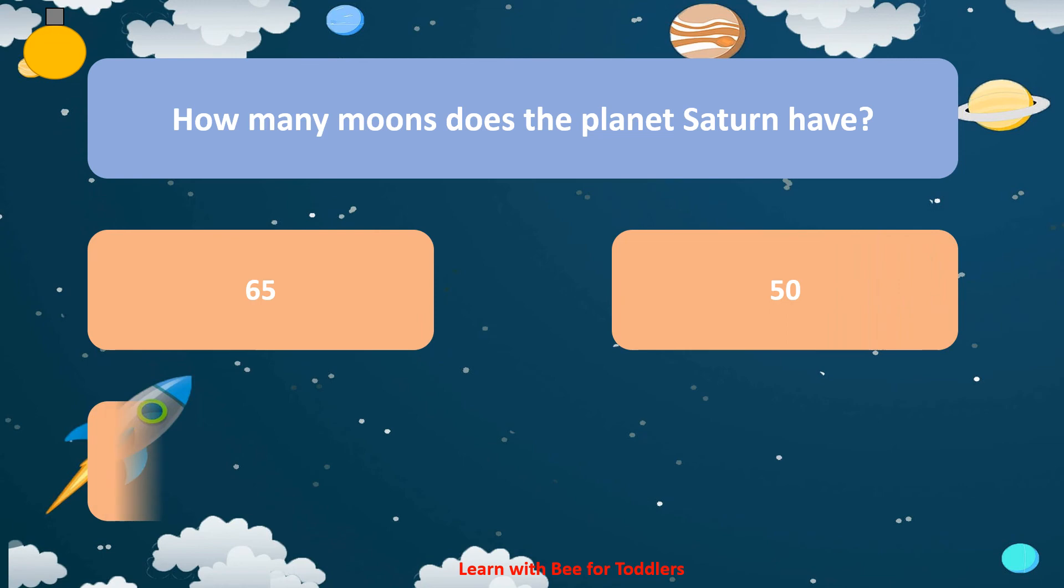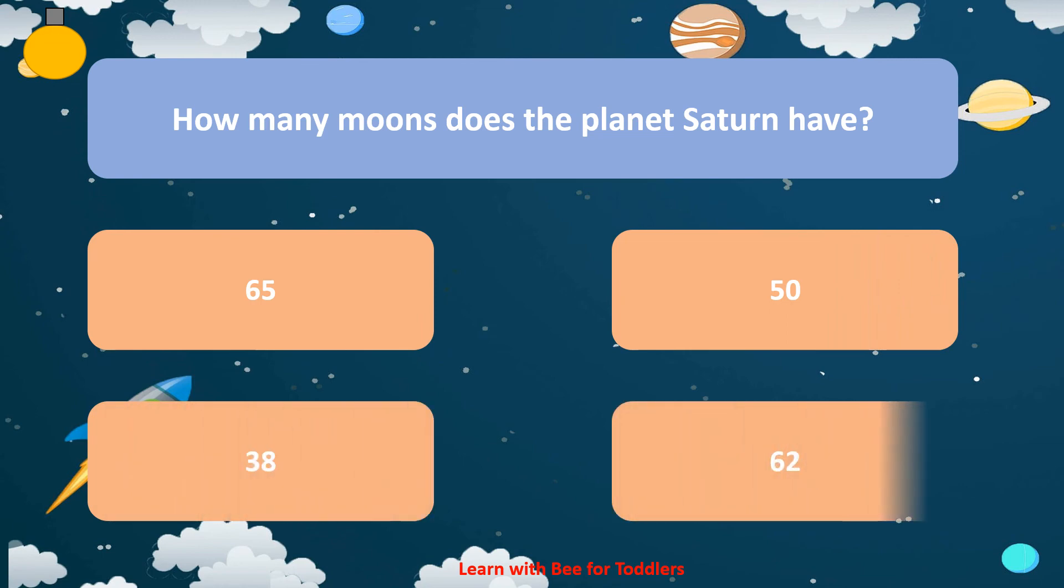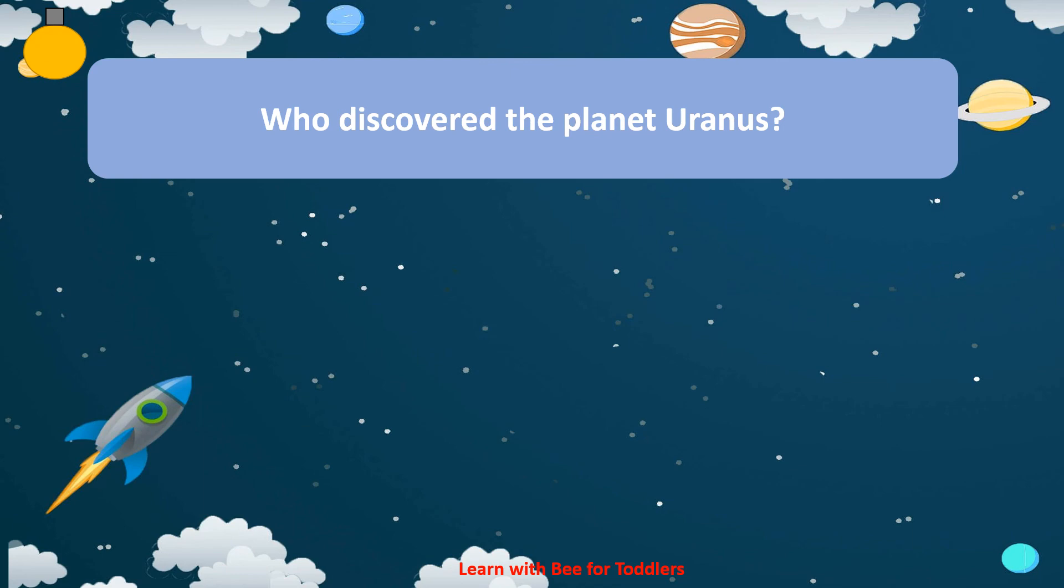50. 38. 62. Who discovered the planet Uranus? Joseph Priestley.